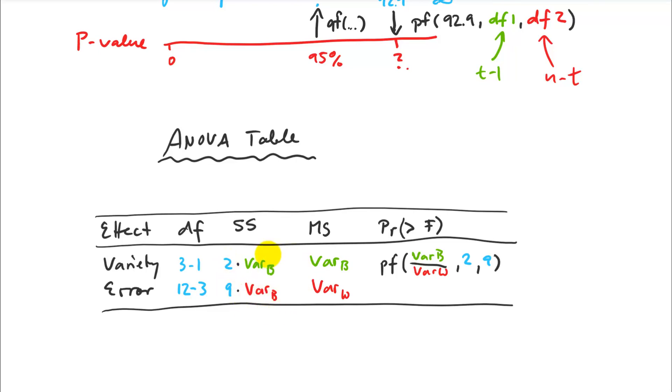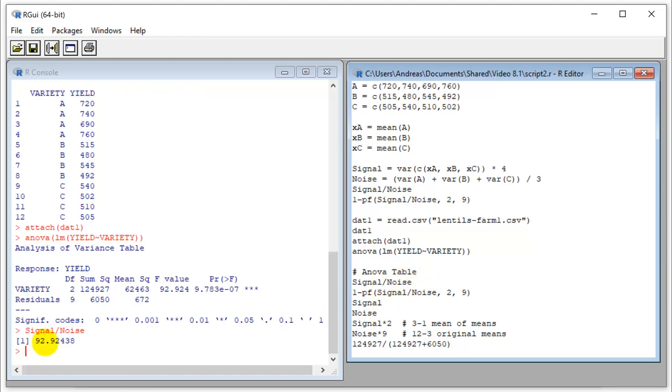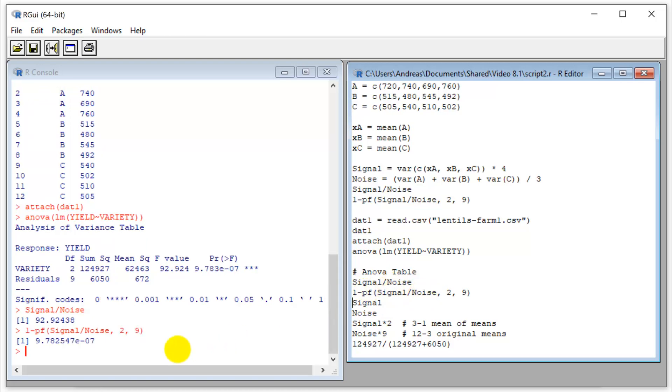Good, and just to be sure that what I told you here is actually correct, let's go back to R and check the numbers. So let's start with our signal to noise ratio here, that is 92.9, so that is this value here. Then we already established that this one is correct, but I just run it again anyway, so that is my p-value which we can find here. And then let's check what the signal is, so that's my variance between.